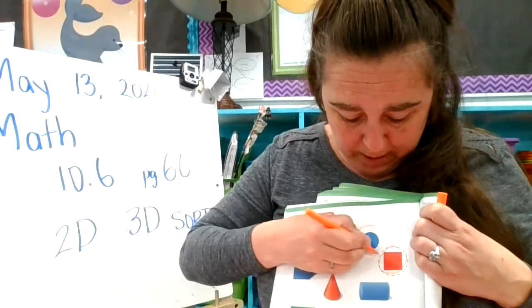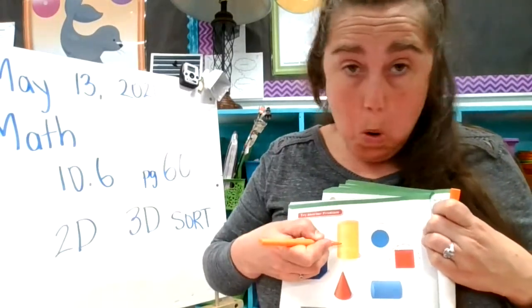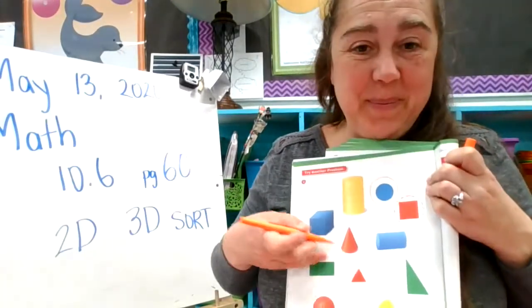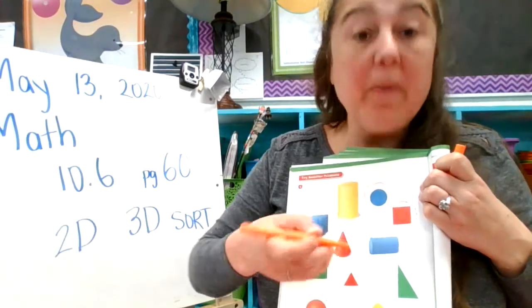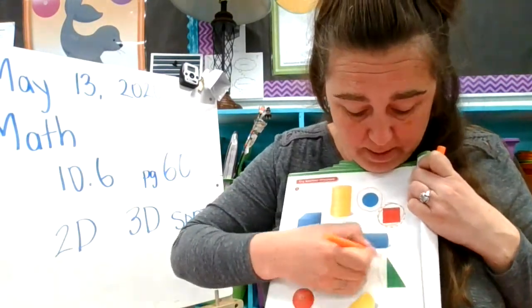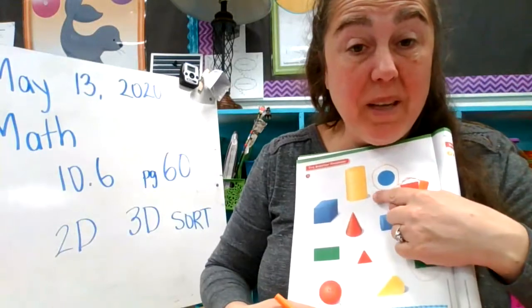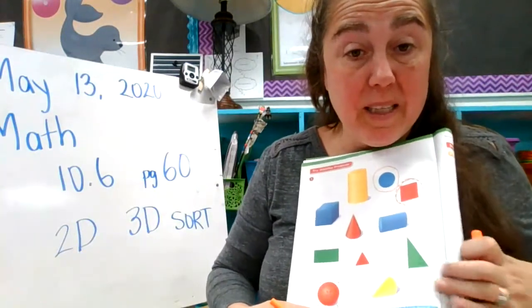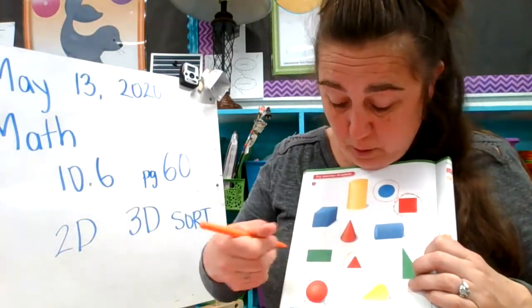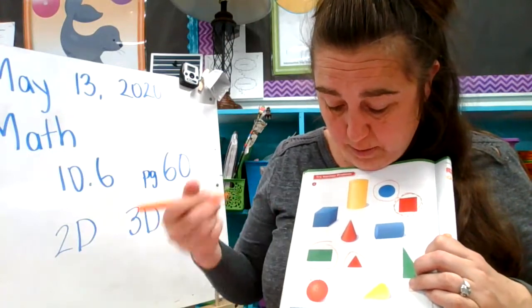So right now, turn your page, join me, and circle the two-dimensional. Nope. Nope. Nope. Nope. Yes, two-dimensional. Notice how the three-dimensional shapes have a little bit of shadow on them because they stand up. Nope. Two-dimensional, two-dimensional.